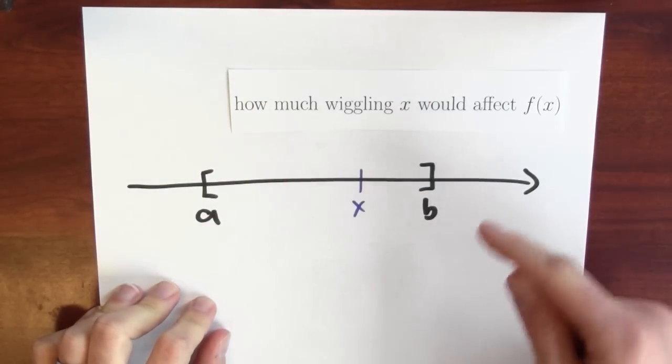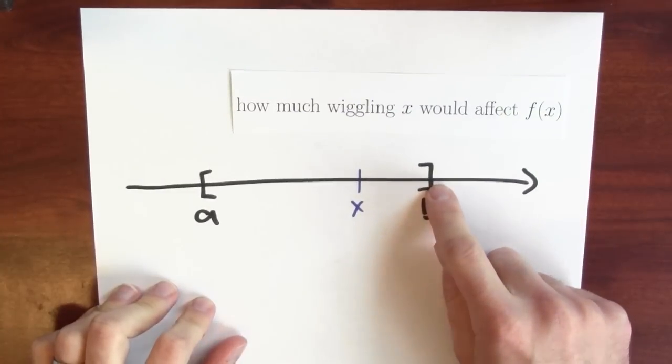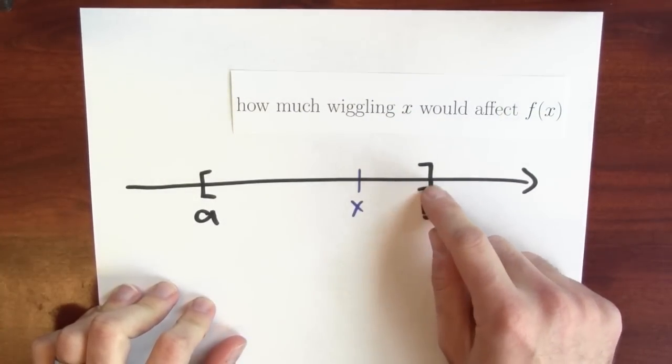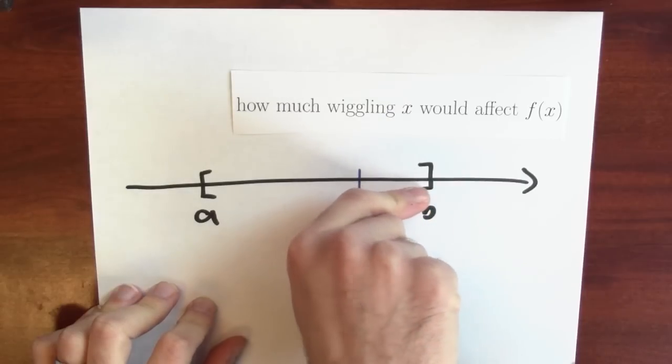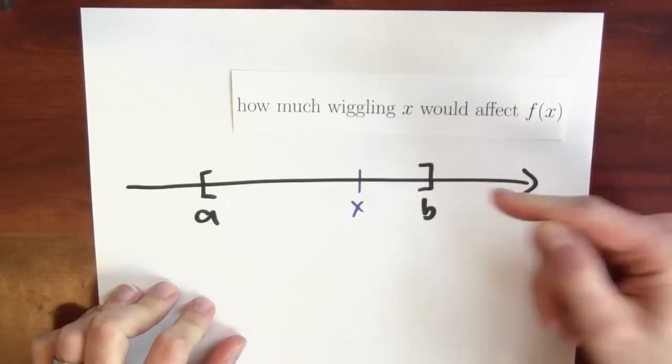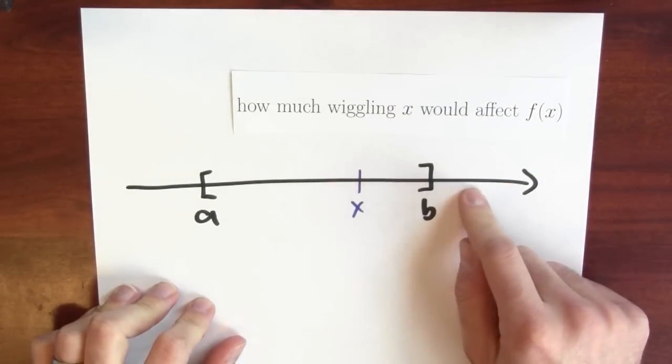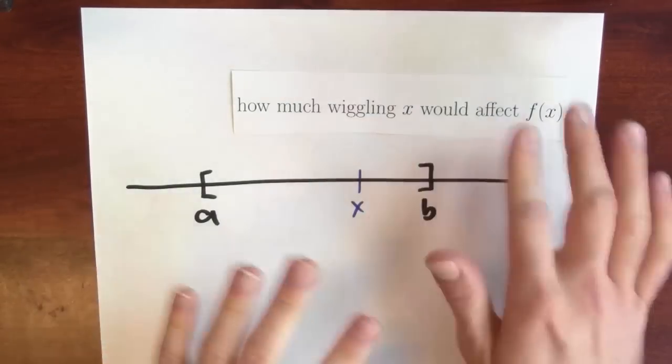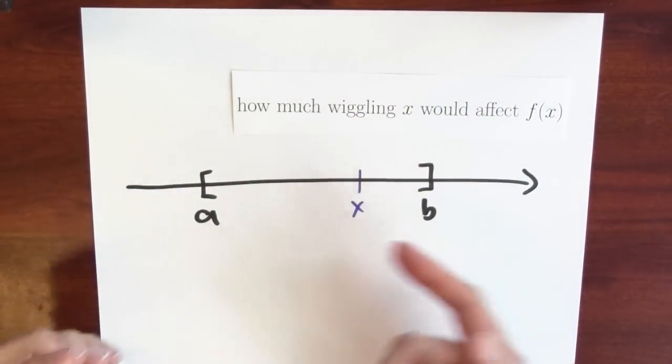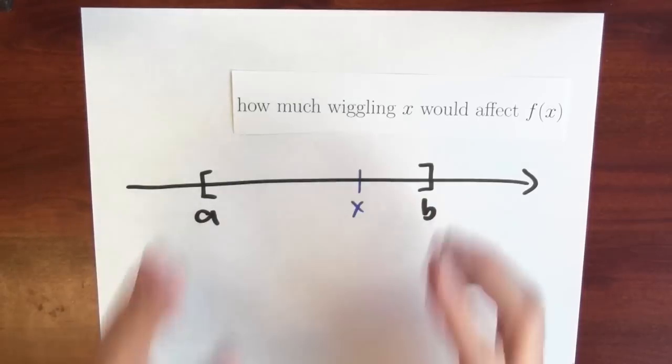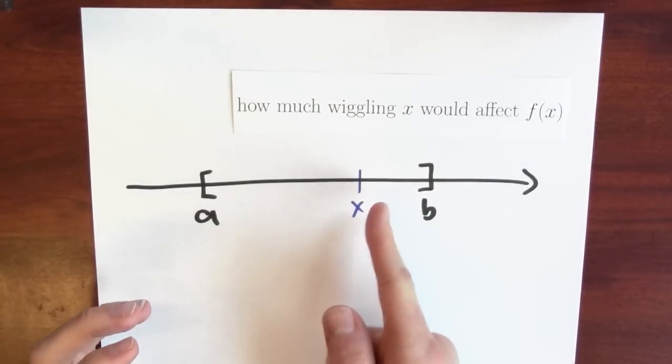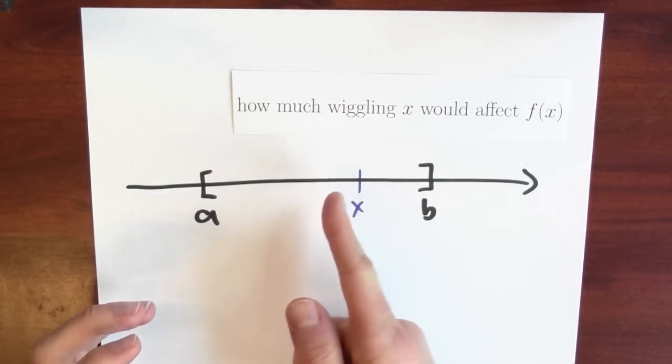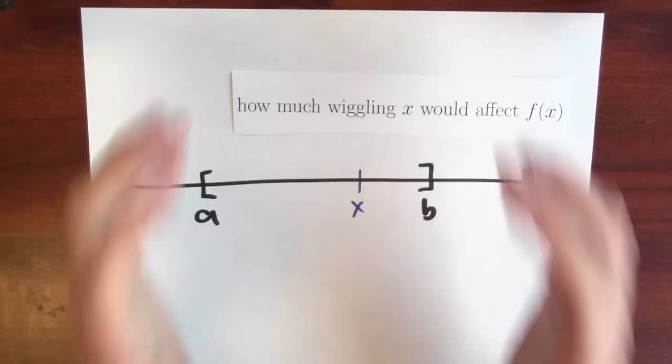Unless I'm standing, say, at the point b. If I'm standing right at b, I can wiggle to the left, but I can't wiggle at all to the right without walking right outside of the interval. So in light of this, I don't really want to talk about differentiability on closed intervals. I only want to talk about differentiability when I can honestly talk about wiggling the input. And that's only true on open intervals.